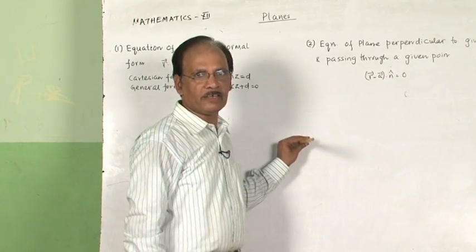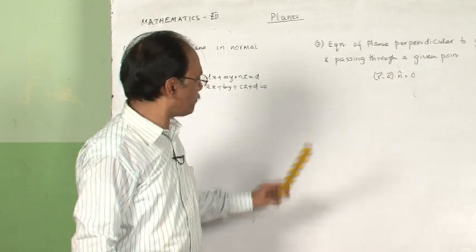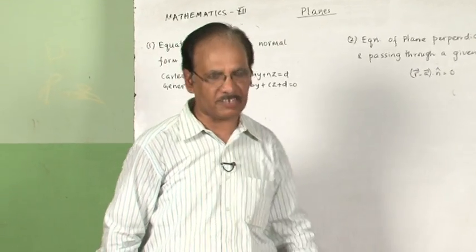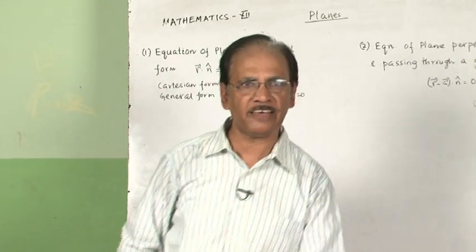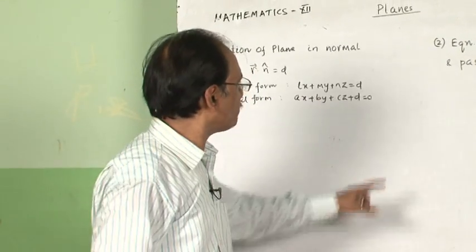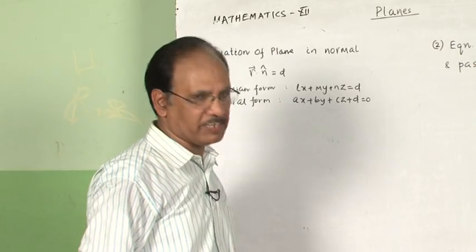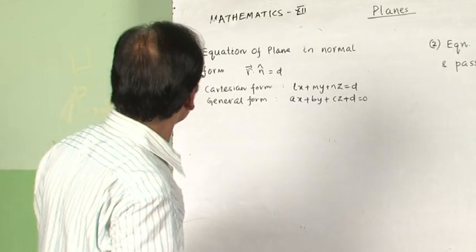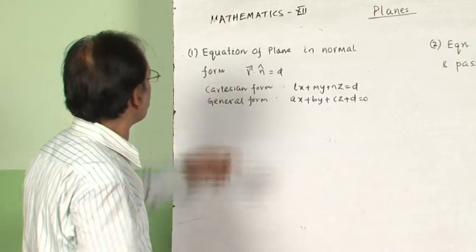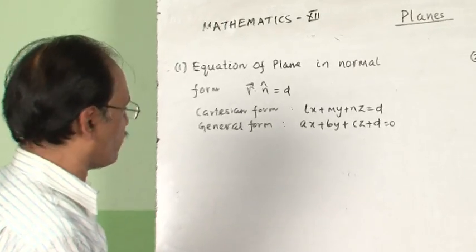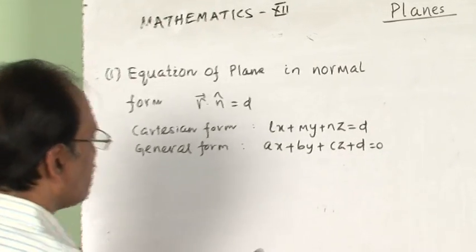For a unique plane, the point through which the plane passes as well as the line which is perpendicular to the plane is important. On the basis of that, we have developed the equation of the plane in the normal form.